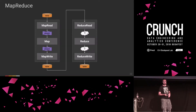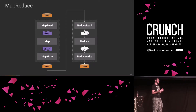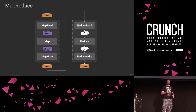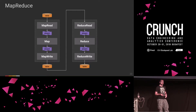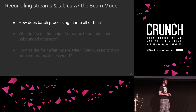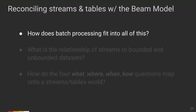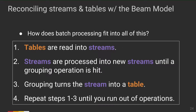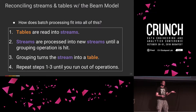The reduce phase looks a lot like the map phase — it's basically another map phase given a large iterable of values. So to answer our questions: how does batch processing fit in? Tables are read into streams. Streams are processed into new streams until a grouping operation is hit. Grouping turns the stream into a table, and then you repeat until you run out of operations. MapReduce does this twice and calls it a day. And what is the relationship of streams to bounded and unbounded data sets? Streams are just the in-motion form of data, whether it's bounded or unbounded.